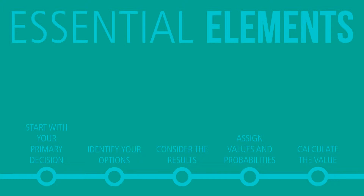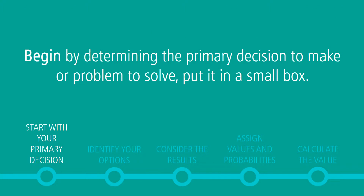Here are the essential elements of creating decision trees. Begin by determining the primary decision to make or the problem to solve. This becomes your goal. Draw a small box on the left side of a piece of paper or on your computer screen. Label the objective box with a description of the problem.